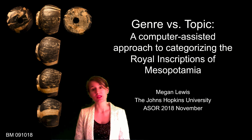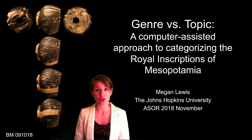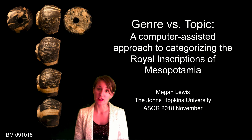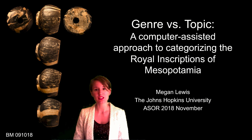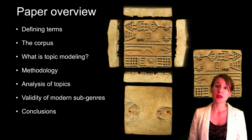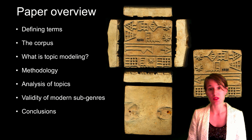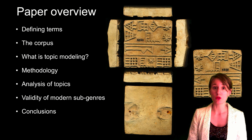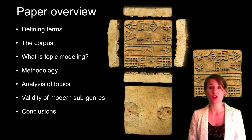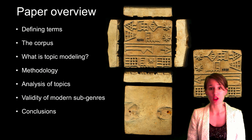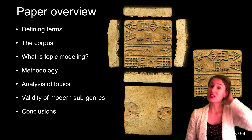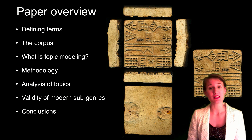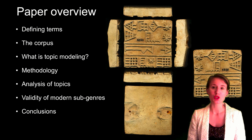This paper attempts to gauge the validity of the sub-genres of modern scholarship using topic modeling to investigate to what extent royal inscriptions fit into discrete sub-genres. The paper will first define some key terms, then provide an overview of the corpus used and a brief description of topic modeling. An account of the methodology will follow before an analysis of selected topics. The validity of modern sub-genres will be tested using a small sample of 20 inscriptions, and finally the conclusions of the paper.